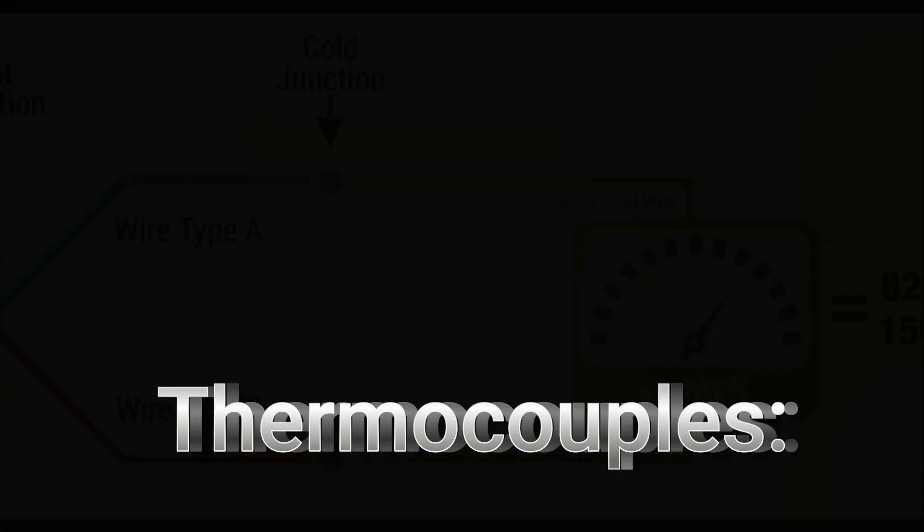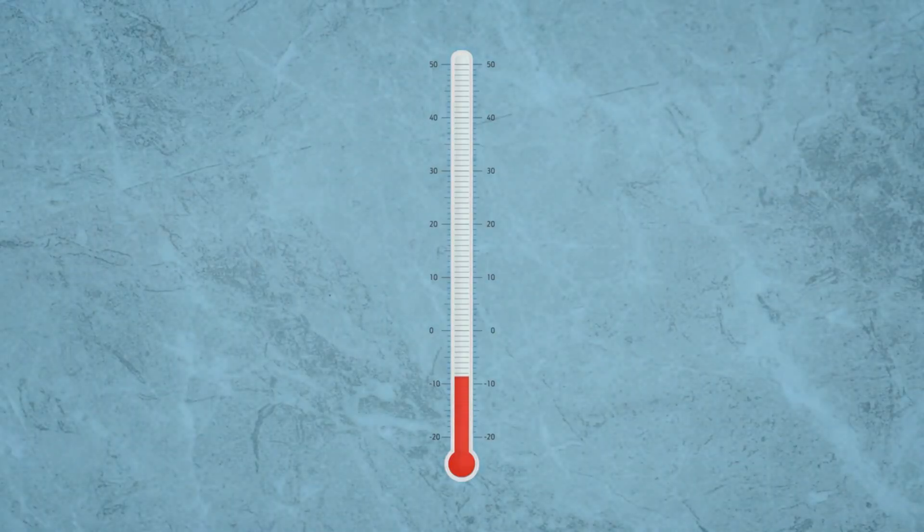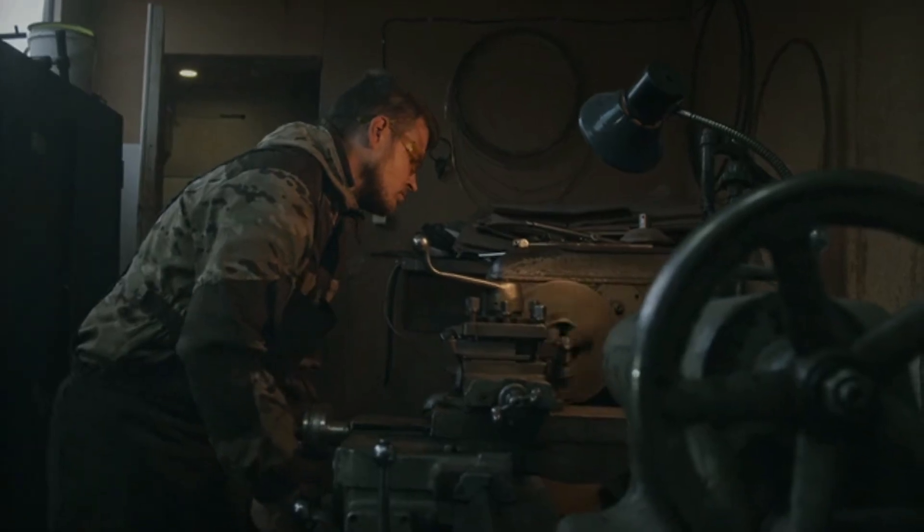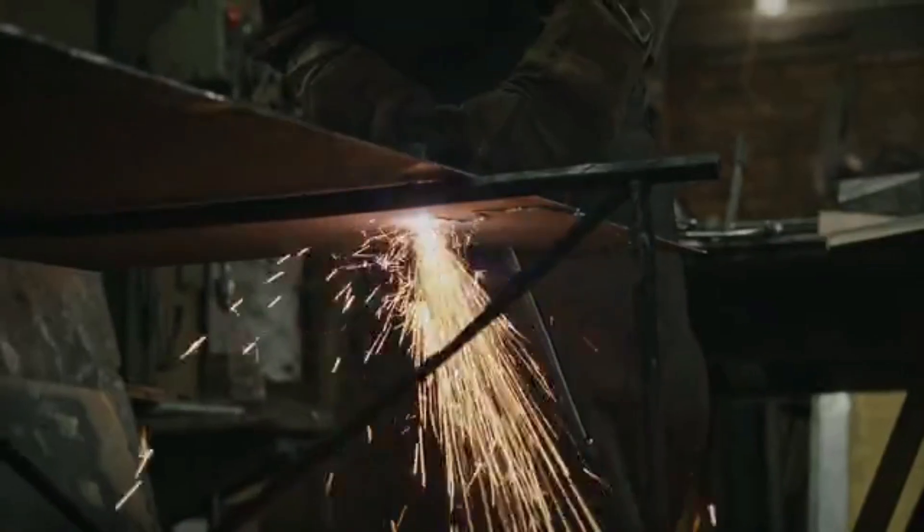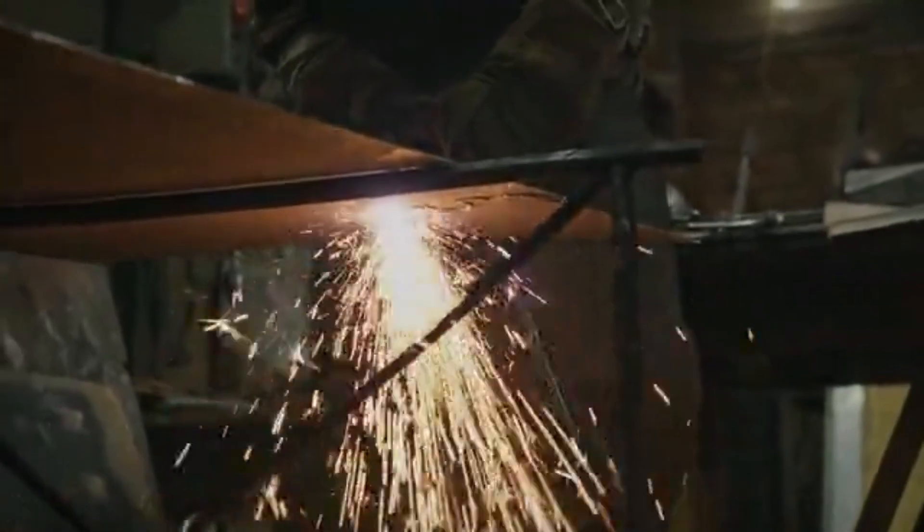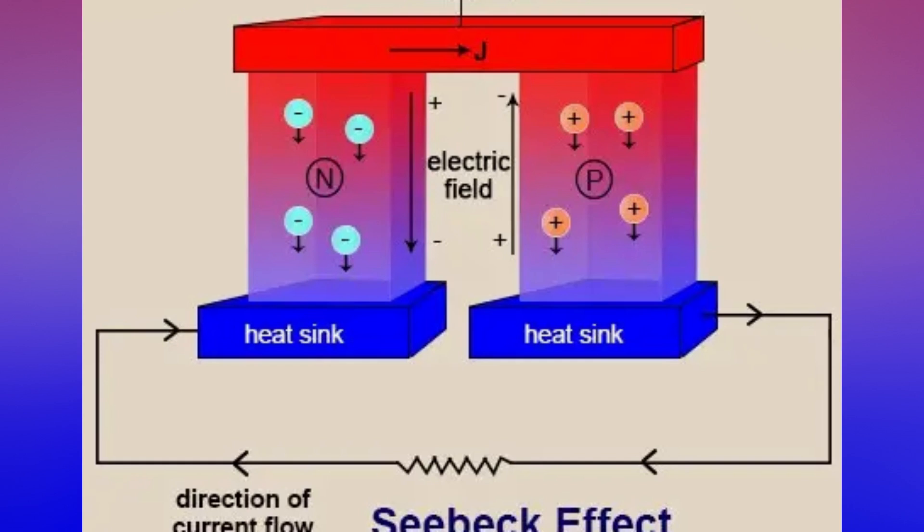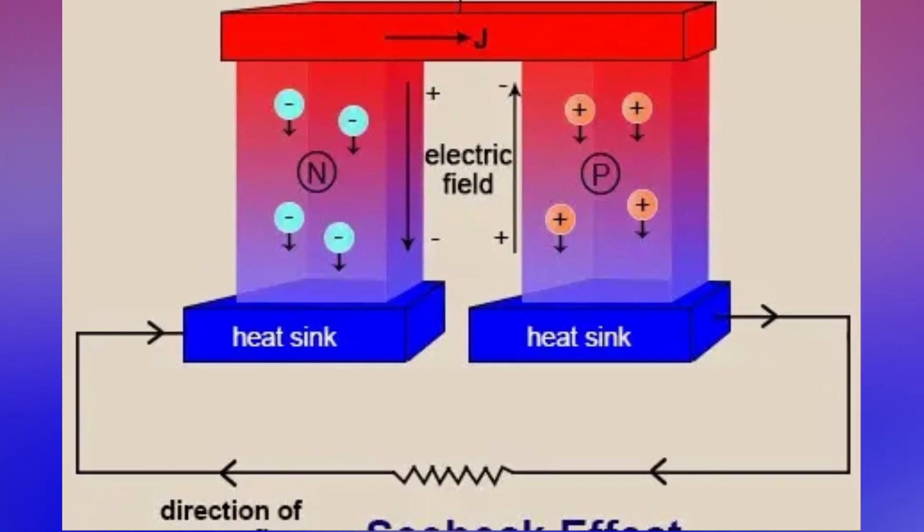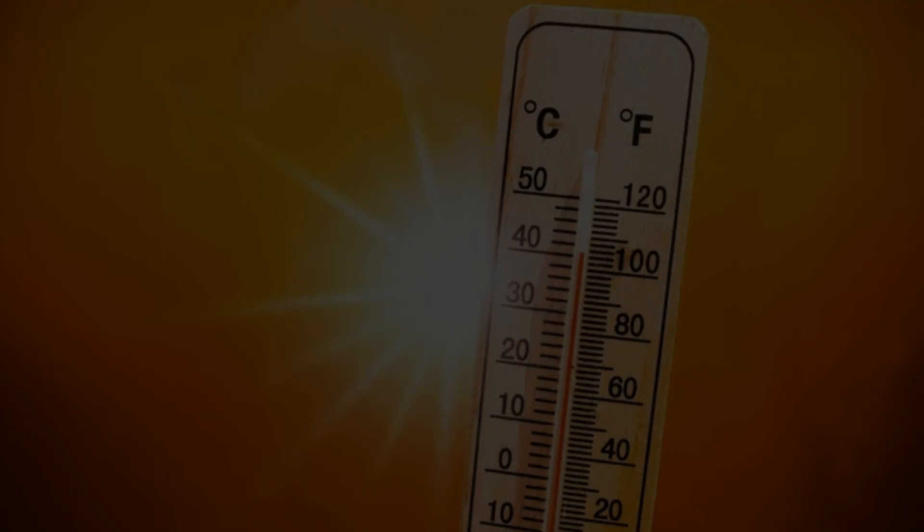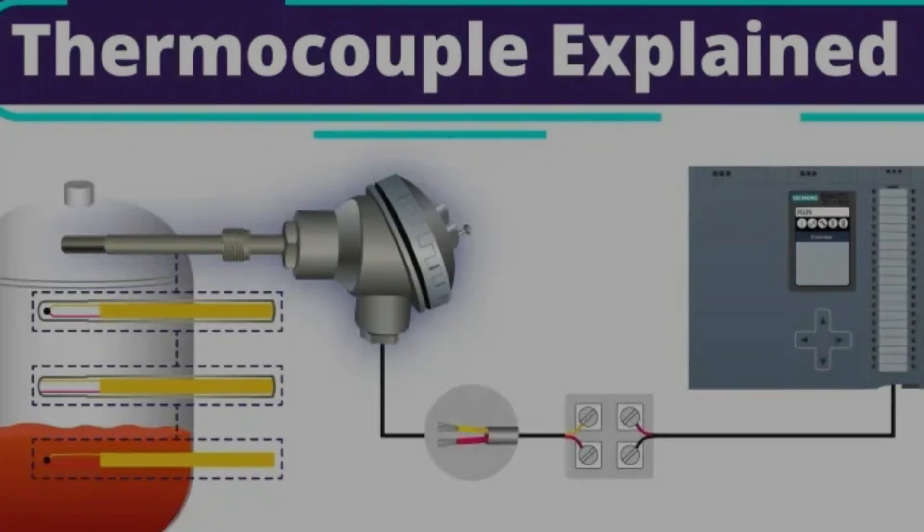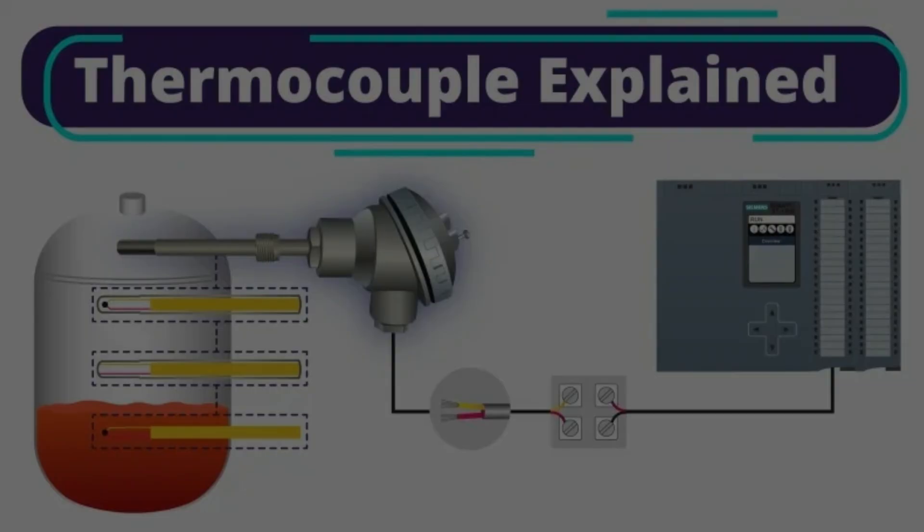Rhenium is a key component of thermocouples used for measuring high temperatures in industrial processes like steel manufacturing, aerospace testing, and power generation. Thermocouples operate based on the Seebeck effect, where the voltage produced is proportional to the temperature difference between the junctions. Rhenium's high melting point and stability at elevated temperatures make it suitable for thermocouple applications requiring precise and reliable temperature measurements.